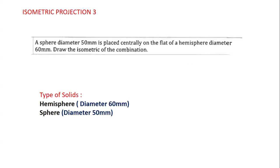Hi, I'm Mohan. In this video I'm going to explain isometric projection. This question is from the V2 model question paper. The question is: a sphere of diameter 50mm is placed centrally on the flat of a hemisphere of diameter 60mm. Draw the isometric of the combination. In this problem we have two solids — the first one is a sphere of diameter 50mm and the second one is a hemisphere of diameter 60mm.